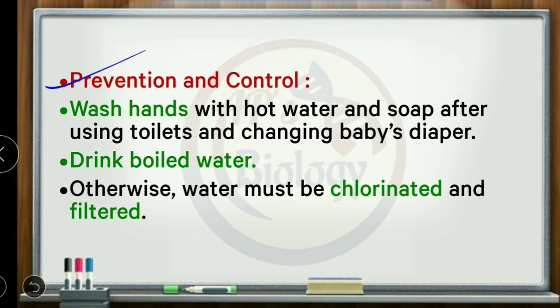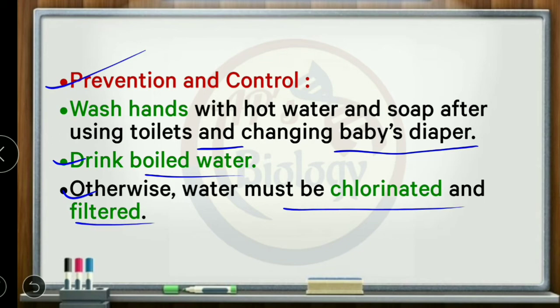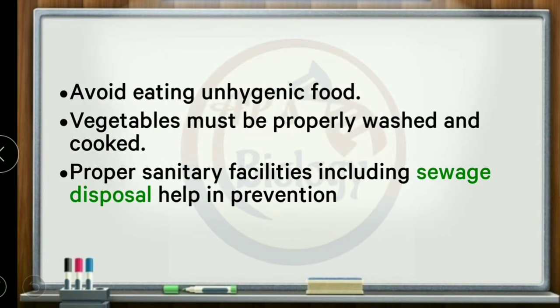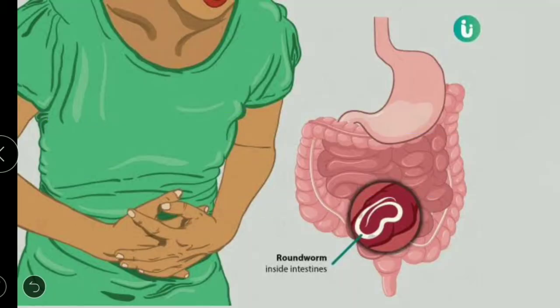For prevention and control: wash hands with water and soap after using the toilet and changing diapers. Drink boiled, chlorinated, or filtered water. Avoid eating unhygienic food; vegetables must be properly washed and cooked. Proper sanitary facilities including sewage disposal help in prevention.